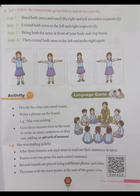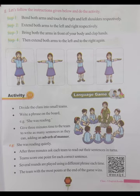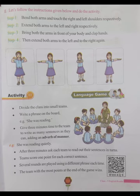Activity 11: Language Game. Divide the class into small teams. Write a phrase on the board, for example: 'She was reading.' Give 3 minutes time to the team to write as many sentences as they can by adding an adverb of manner, for example: 'She was reading quietly.' After 3 minutes, ask each team to read out their sentences in turns. Each team scores 1 point for each correct sentence. Several rounds are played using a different phrase each time. The team with the most points at the end of the game wins.